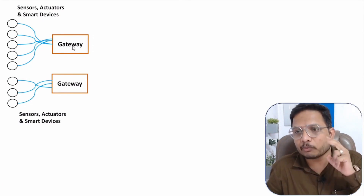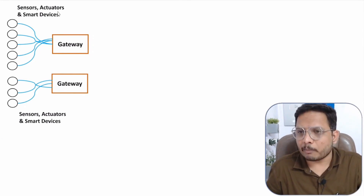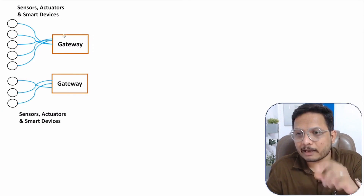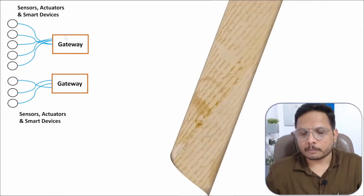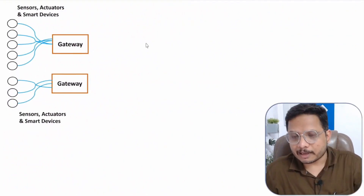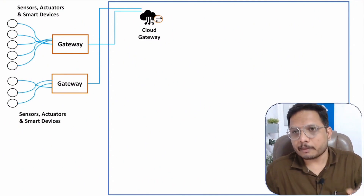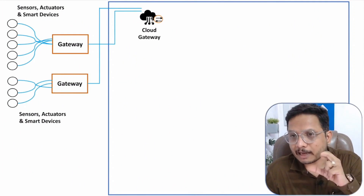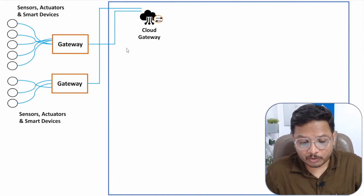The gateway will perform one more function — it will send commands to the actuator. Based on the commands given to the actuator by the gateway, the actuator will provide a physical response. The next block is the cloud gateway. These gateways are connected to the cloud gateway, which provides interaction between the gateway and the IoT server. There will be an IoT server which we interface using the cloud gateway to take data from sensors.